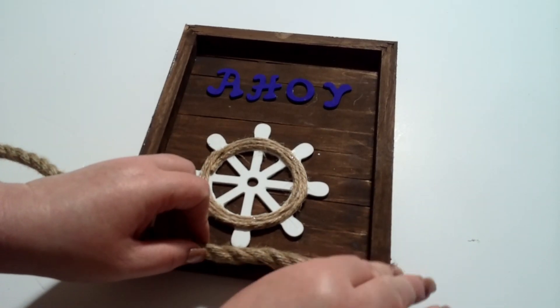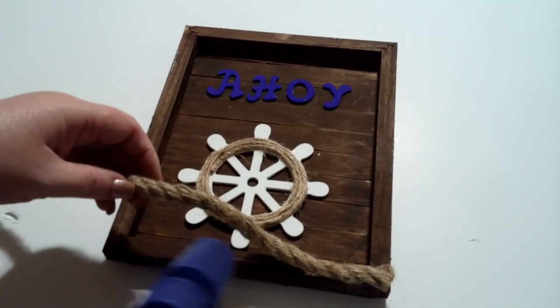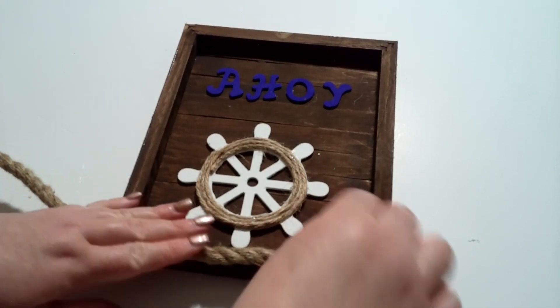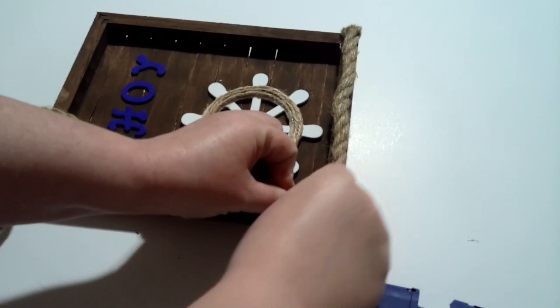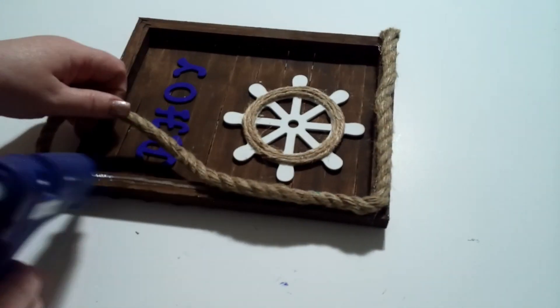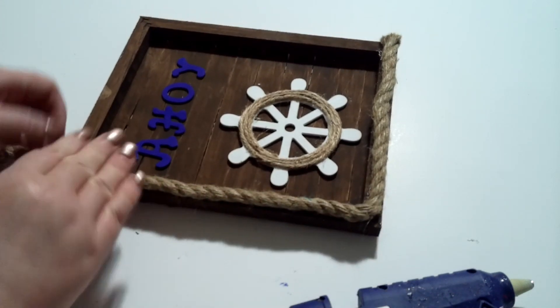Lastly for this project, we're going to take some nautical rope that I purchased from Dollar Tree and just hot glue it around the edges of our project. It comes out super cute and gave it a really nice coastal nautical finish look to it. I just love the outcome of it.